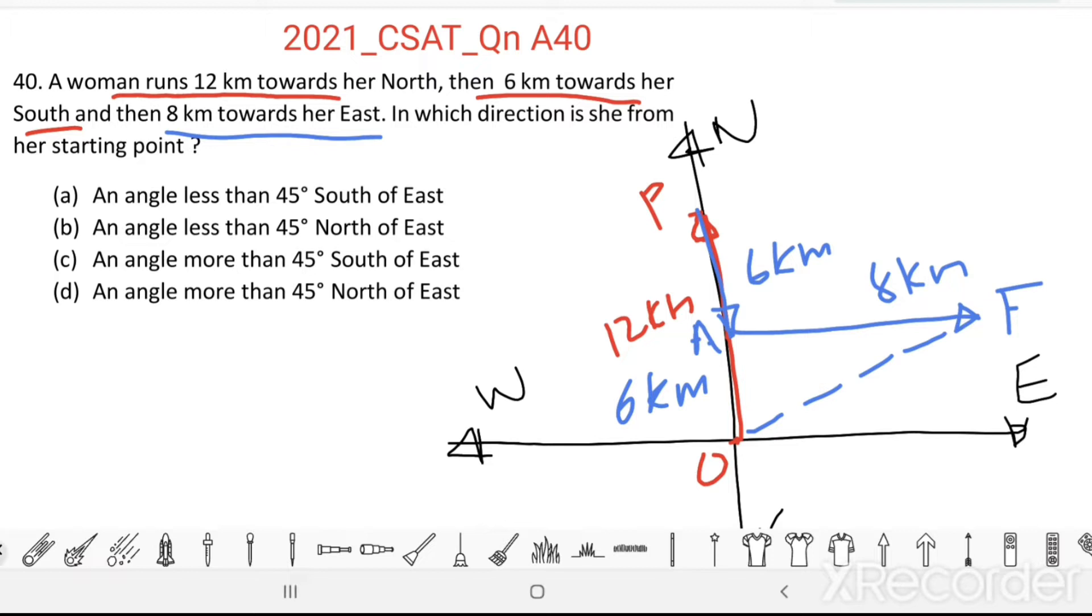From the figure, it is clear that now she is standing north of east from her starting point. Let us take this angle as M. You can see, our answer will be either option B or D.